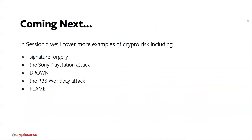That's the first two aspects of crypto risk — this is the end of part one of the training. In session two, we'll cover more examples of crypto risk, including signature forgery through bad signature modes, the attack on Sony PlayStation 3 DRM, the DROWN attack on TLS, the RBS WorldPay attack on the cash machine network, and the Flame super-malware. Stay with us for session two, and don't forget to subscribe to the CryptoSense YouTube channel.